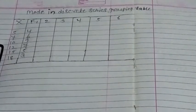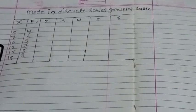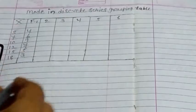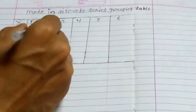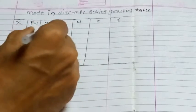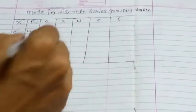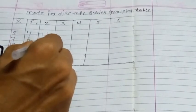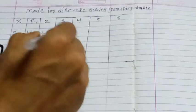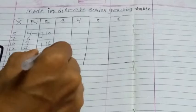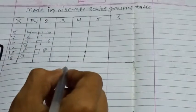Now we are going to solve this question. In the 2nd column, we have to add two pairs: 4 and 6 gives 10; 9 and 7 gives 16; 5 and 3 gives 8.